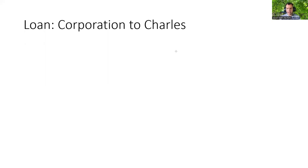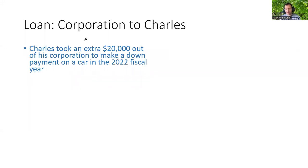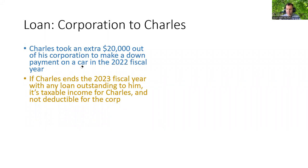This next scenario is a little more complicated — where we have a loan from the corporation to Charles. Charles borrowed $20,000 from his corporation to help make a down payment on a car, taking that money out in the 2022 fiscal year. That by itself is not a problem. But if he ends the 2023 fiscal year with any loan outstanding to him, it's taxable for Charles and not deductible for the corporation. Basically, any amount outstanding for two consecutive year-ends — just those two points in time — determines whether this tax consequence happens.